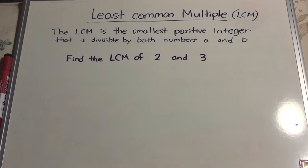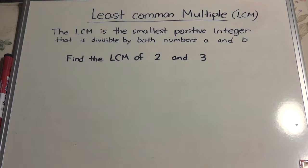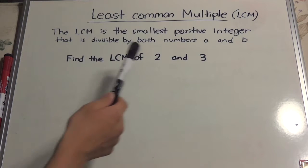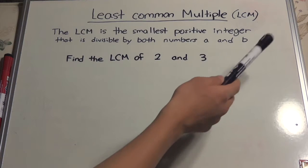Today we're going to be going over the least common multiple, or the LCM. The LCM is the smallest positive integer that is divisible by both numbers A and B.